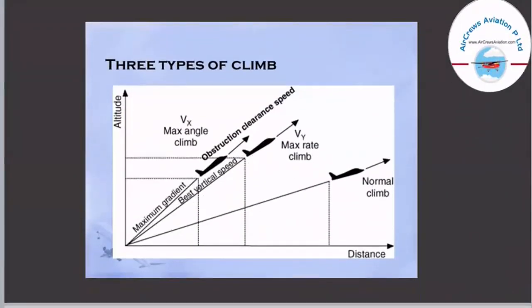There are three types of climb. A graph of altitude versus distance shows: first, a normal climb; then at Vx, the maximum angle climb, which is the maximum gradient used for obstruction clearance speed to clear any obstruction; and then Vy, the best vertical speed, referred to as the maximum rate climb.